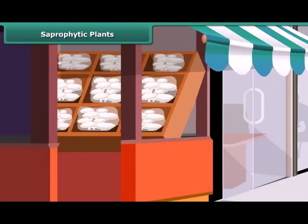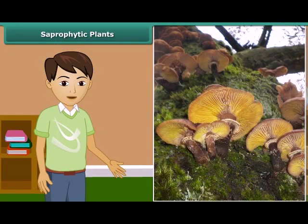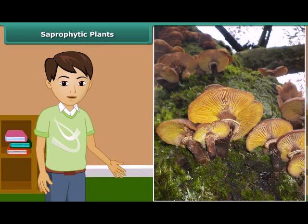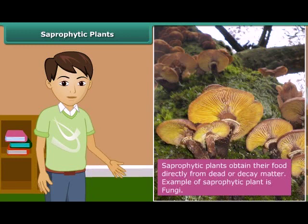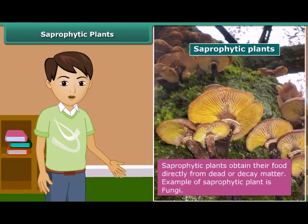You might have seen packets of mushrooms at a vegetable shop, or fluffy umbrella-like patches growing on rotting wood during the rainy season. These organisms are commonly called fungi, and they get their nutrition from dead and decaying matter. To get nutrients, they secrete digestive juice and convert the matter into a solution. This mode of nutrition, in which organisms take in nutrients in solution from dead and decaying matter, is called saprotrophic nutrition, and organisms using it are called saprotrophs. Thus, fungi are saprotrophs.